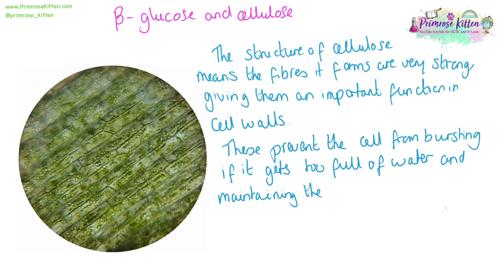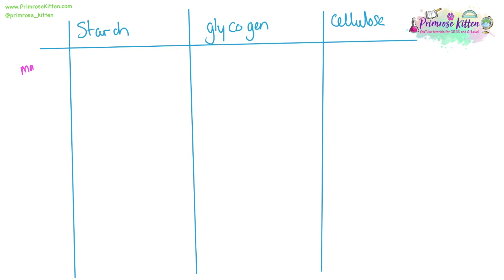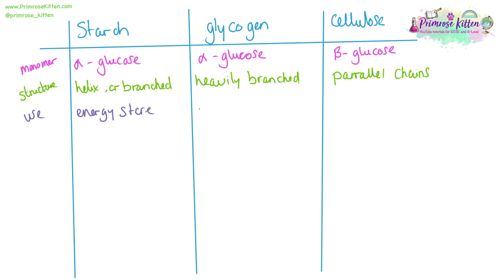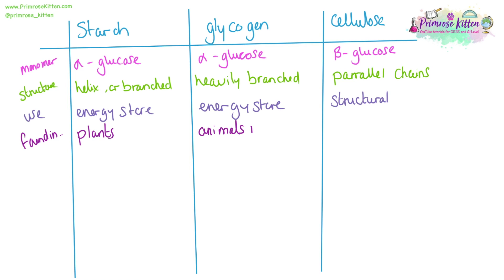Cellulose prevents the cell from bursting if it gets too full of water, and maintains the turgid shape of the cells. To summarise: for starch, the monomer is alpha-glucose; for glycogen, the monomer is alpha-glucose; and for cellulose, the monomer is beta-glucose. The structure of starch is helical with some branches; glycogen is heavily branched; whereas cellulose is in parallel chains which are cross-linked. Starch and glycogen can be used as a store of energy, whereas cellulose is more structural in cell walls. Starch is found in plants, glycogen is found in animal and bacterial cells, and cellulose is found in plant cells.